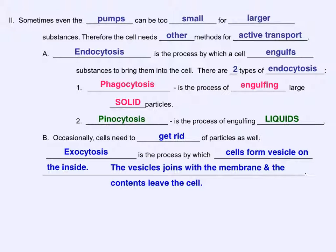Now occasionally cells need to get rid of particles as well, but this also takes energy. The reverse process of endocytosis is called exocytosis, and this is the process by which cells form vesicles on the inside. These vesicles join with the membrane, and the contents leave the cell. They are exiting the cell, thus the name exocytosis.